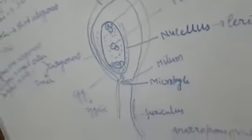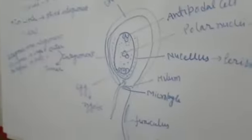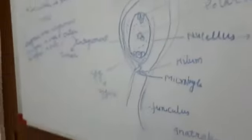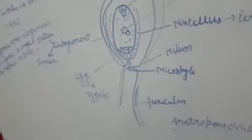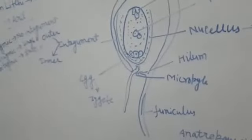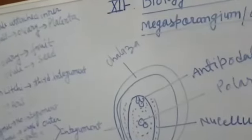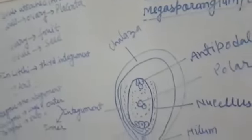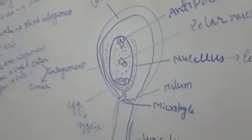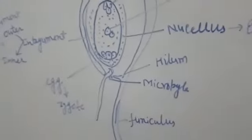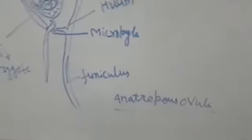A mass of parenchyma cells develops and this is called the indothelium. In some places, such as in the funicle, there is a vascular strand supply. There is also a structure called the obturator, which provides the pollen tube its path. This is an example of an anatropous ovule.